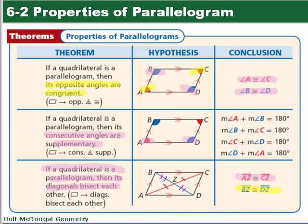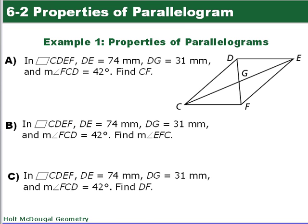So now we have three examples we're going to look at. The first one in parallelogram CDEF: DE is 74 millimeters, and DG is 31. The measure of angle FCD is 42. We want to find the length of CF. So we're looking for the length of this side, which in the parallelogram has to be congruent to that side. So it's going to be 74.